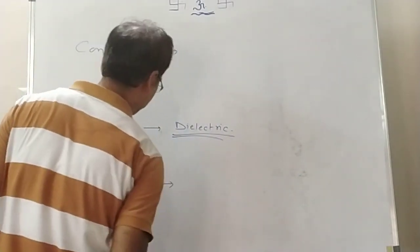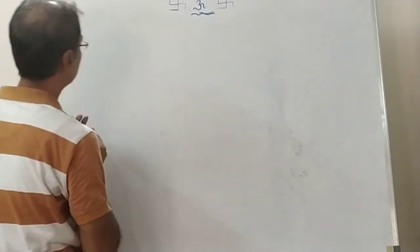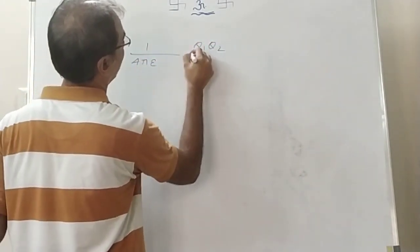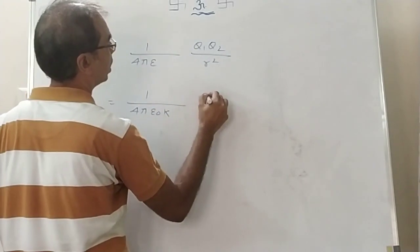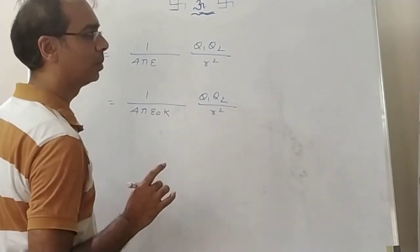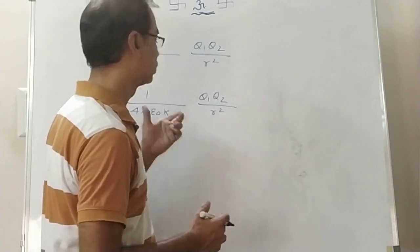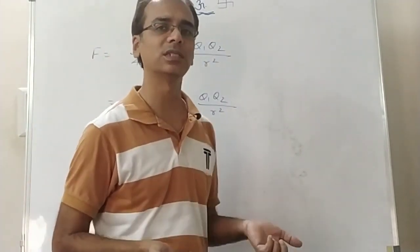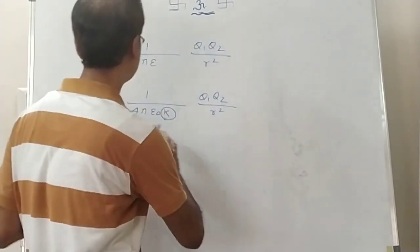Coming back to force in a medium, the formula is F = 1 by 4 pi epsilon naught k times q1 q2 by r squared. Conductors do not change the force — it remains the same. But in a dielectric medium, the force changes because the medium can be polarized.